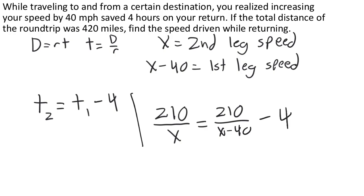Minus 4 doesn't change. So here is our equation. If we solve it, it will tell us what our speed was on the second leg of the trip.